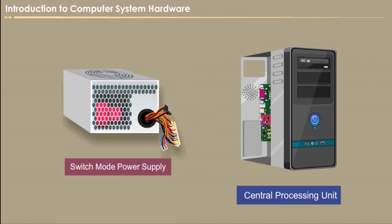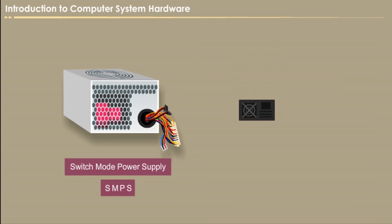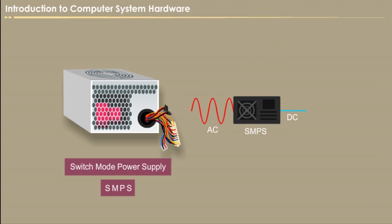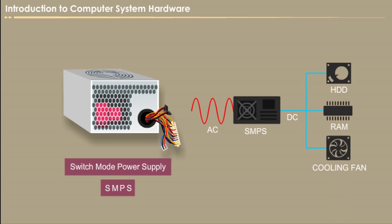Switch Mode Power Supply, that is SMPS. Switch mode power supply efficiently converts the power from one form to another form with the desired voltage levels. It is used to obtain a regulated DC output voltage from an unregulated input voltage. While buying a power supply, you need to determine the amount of voltage required according to your configuration based on the HDD, RAM and cooling fan numbers.